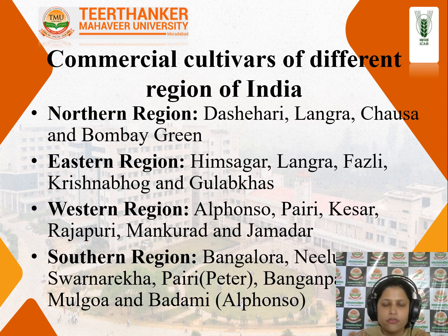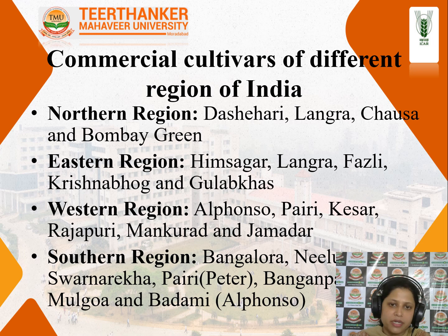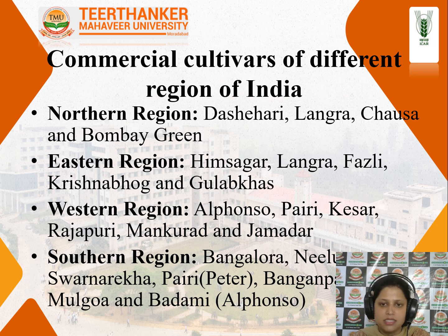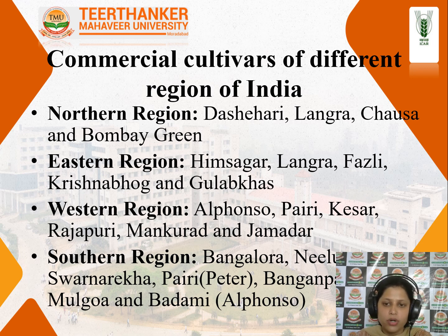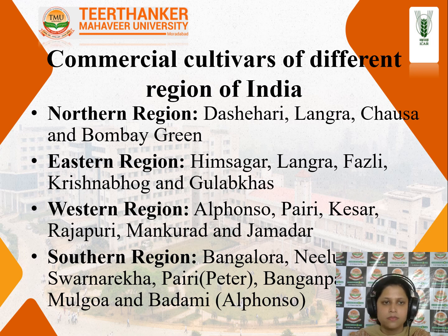There are some commercial cultivars of different regions of India. In the northern region, the varieties most grown are Dasheri, Langda, Chausa and Bombay Green. In the eastern region of India, Hemsagar, Langda, Fusli and Gulabkhas are the cultivars more famous there. In the western region, Alfonso, Perry, Kesar and Rajapuri varieties are being grown. In the southern part of our country, Bengalura, Neelam, Swarnarekha, Perry, Banganapalli, Malgova and Badami are being grown.